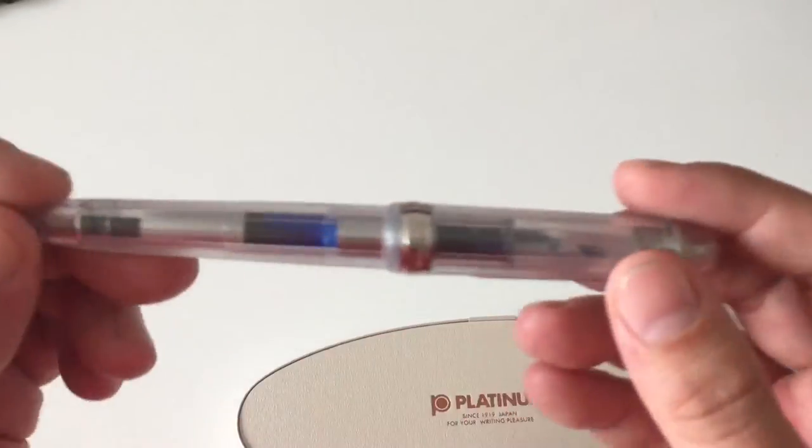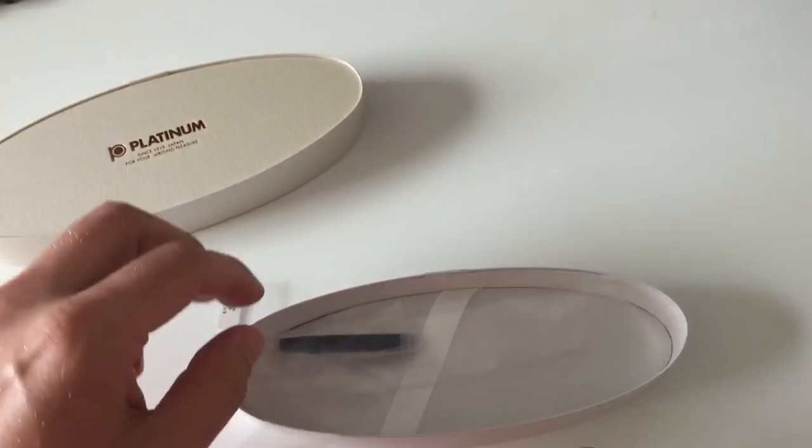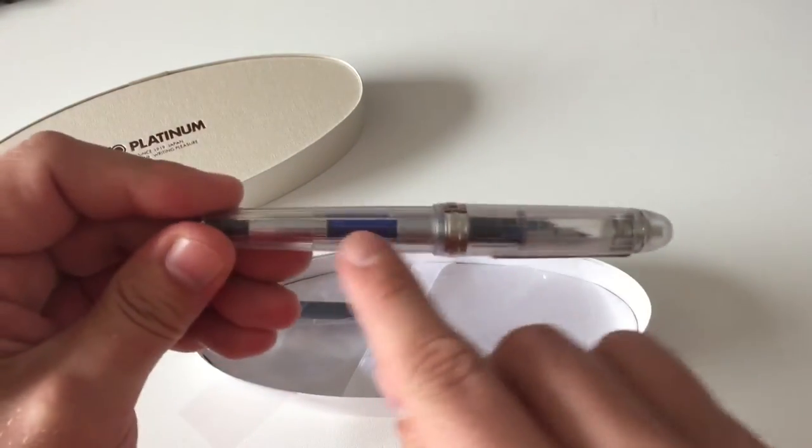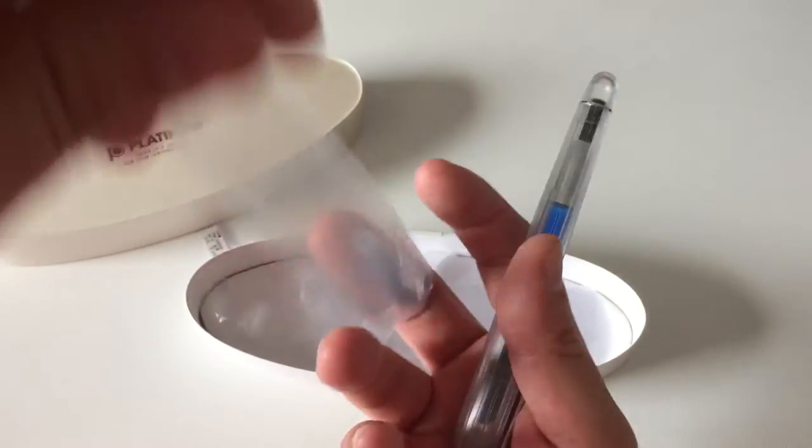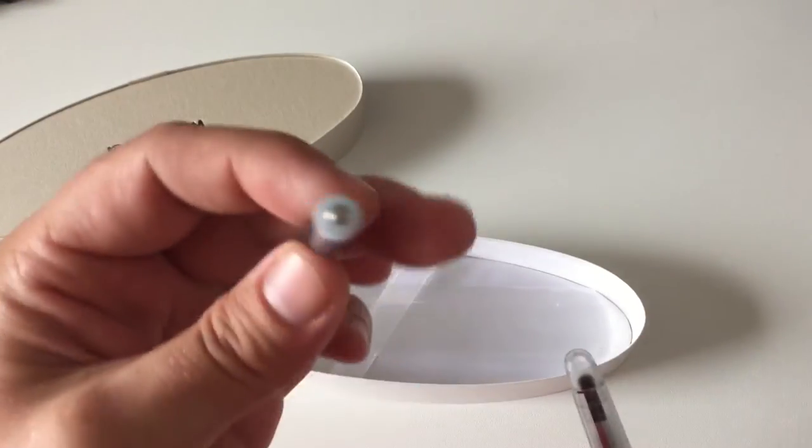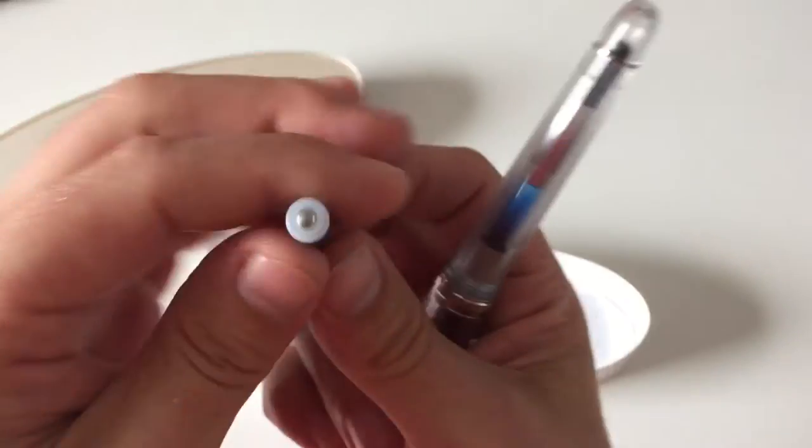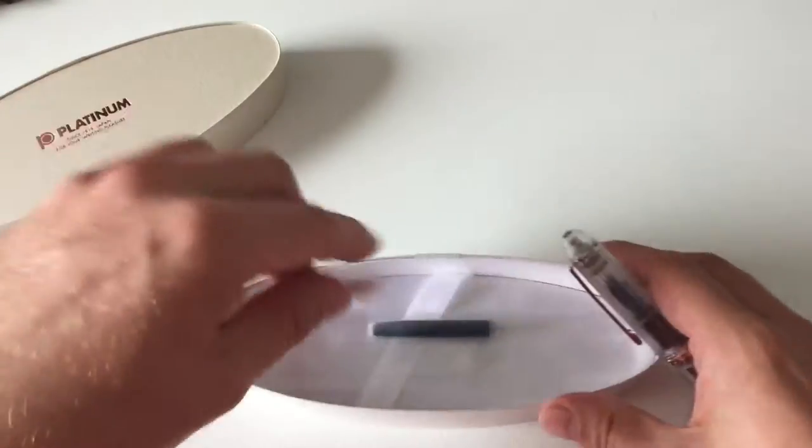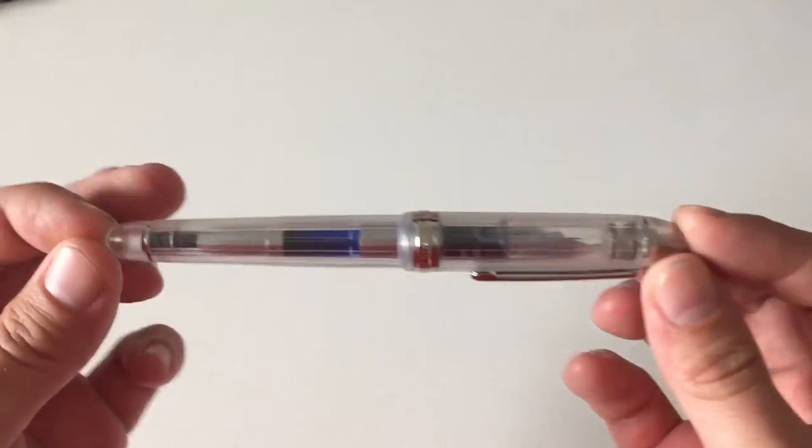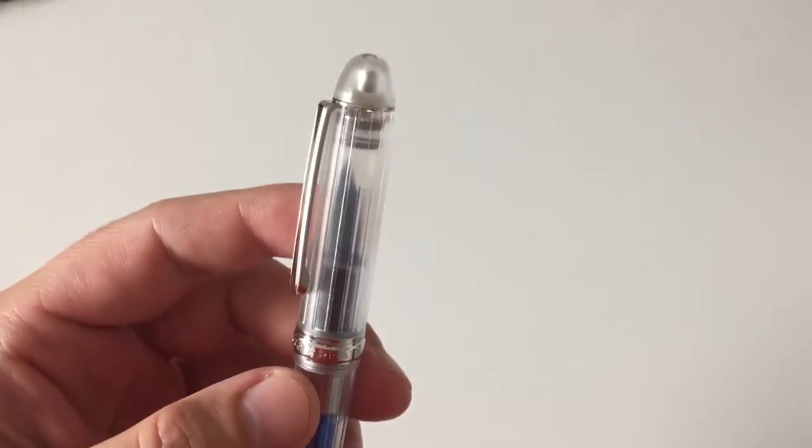The pen itself is really nice—classic cigar-shaped pen. Inside the packet there was a converter, which is already in the pen, and a Platinum ink cartridge. The ink cartridges are proprietary, so they have this larger opening gap here in front. You need either Platinum cartridges or a Platinum converter. The pen itself is this really nice classic cigar shape that I really like.